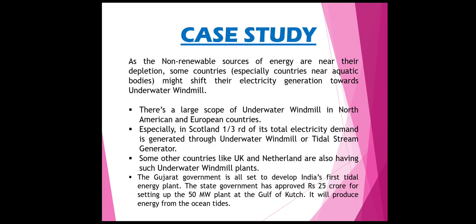Case study: there is large scope for underwater mills in North American and European countries, especially in Scotland, which generates a third of its total electricity demands through underwater mills or tidal stream generators. Other countries like the UK and Netherlands also have such underwater mill plants. In India, the Gujarat government is all set to develop India's first tidal energy plant. The state government has approved 25 crore rupees for setting up a 50 megawatt plant which will produce energy from ocean tides.